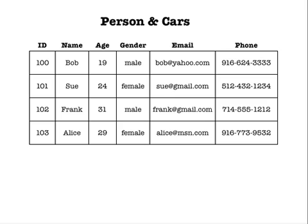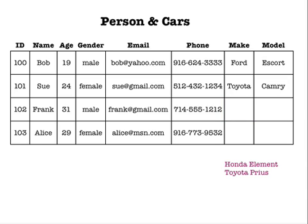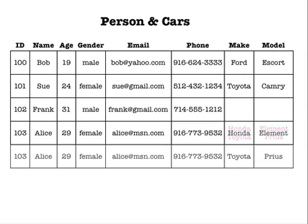Let's expand our database to include information about the cars that our people own. We'll describe a car by its make and model, such as Ford and Escort. By adding two more attributes to each person, a person is now described by the make and model car that they own. Bob owns a Ford Escort. Sue drives a Toyota Camry. Frank doesn't own a car — we'll just leave those cells blank. For Alice, we have a problem. She owns two cars: a Honda Element and a Toyota Prius. We could squeeze both cars into the existing two cells, but that's poor form — each cell should hold only one piece of information. Second, we could create another row for Alice and put one car into each row, but we end up duplicating Alice's personal information and duplicating her primary key — a definite no-no.